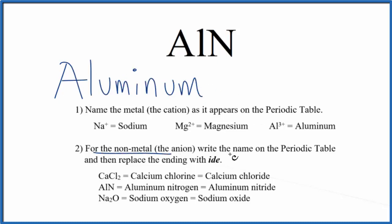Next, for the non-metal, we'll write the name as it appears on the periodic table, the nitrogen. Start off with a lowercase n, and then we replace the ending with ide. So we cross this out, ide.